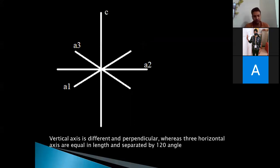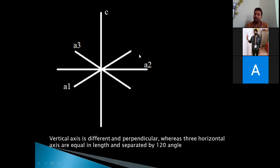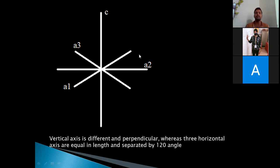This is another unique type of arrangement where we now have four axes in the system instead of three. You must understand that this is not a dimensional axis — you are simply creating imaginary lines to describe the crystal more efficiently. Here, the vertical axis is different in length and perpendicular. This is a very important aspect: the vertical axis is perpendicular and different in length.